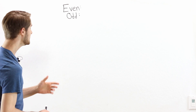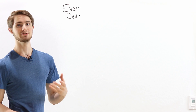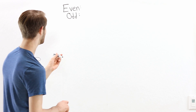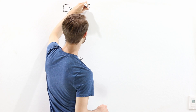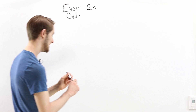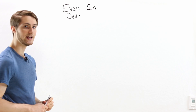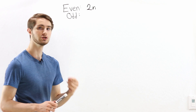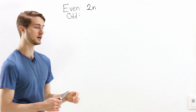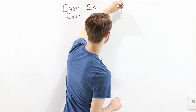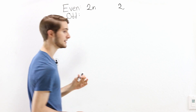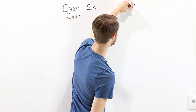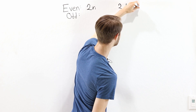Let's start by talking about what is an even number. We're going to define that an even number is any number that can be written as 2 times n, where n is a whole number. Some examples are 2 times 1, which is 2; 2 times 2, which is 4; 2 times 3, which is 6; and so on.